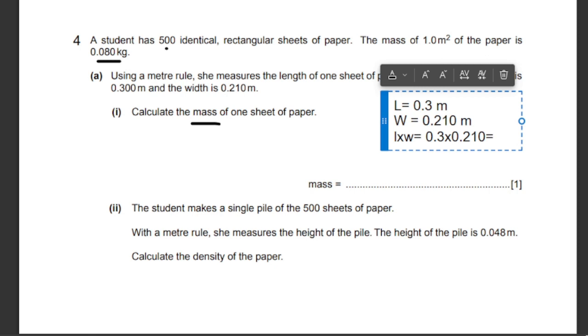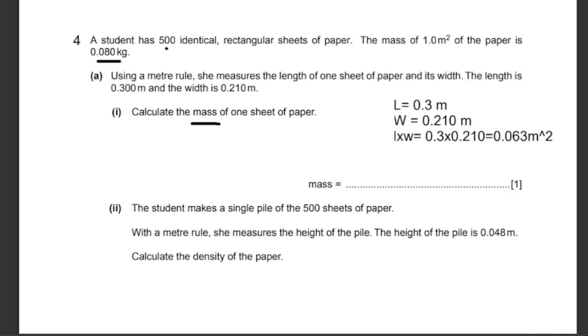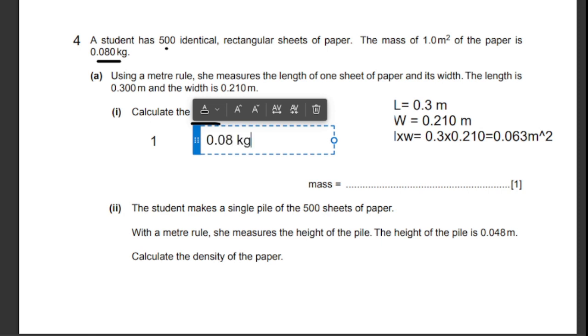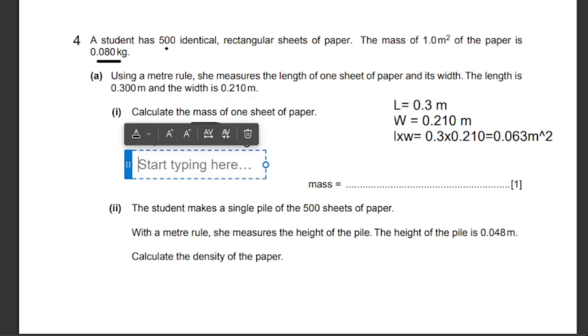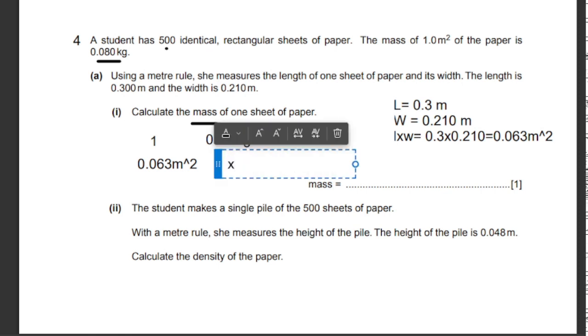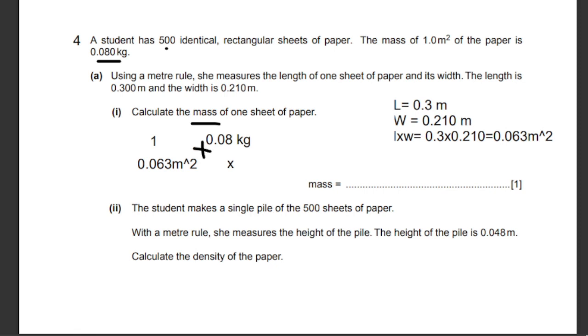Let's put that in the calculator. We will get 0.063 meters squared. Now we can do a quick cross multiplication. If 1 meter cube of paper is 0.08 kilograms, then what will 0.063 meter cube of paper give? We can directly just multiply both of them.